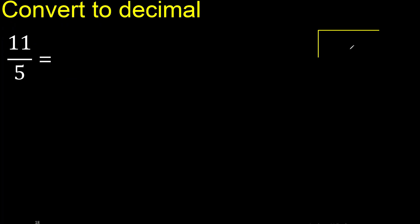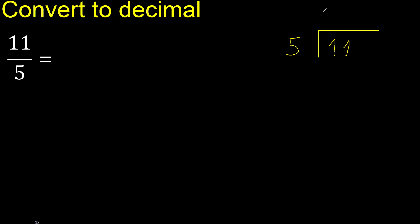11 divided by 5. 11 is not less, therefore 5 multiplied by which number is nearest to 11 but not greater. Multiplied by 3 is 15, which is greater. Multiplied by 2 is 10, which is not greater — ok. Subtract: remainder is 1. There is no number that goes down, therefore complete.